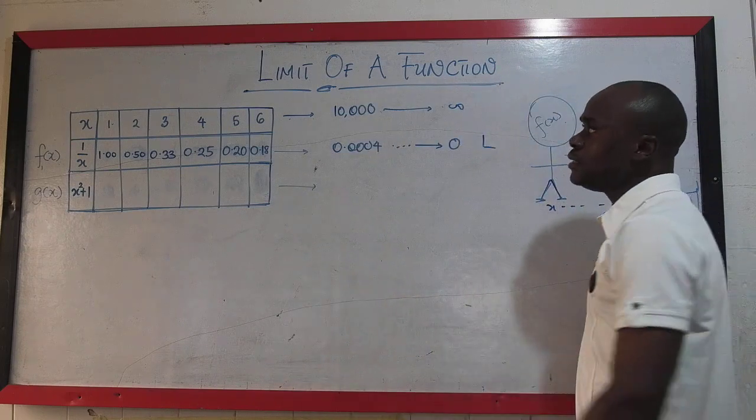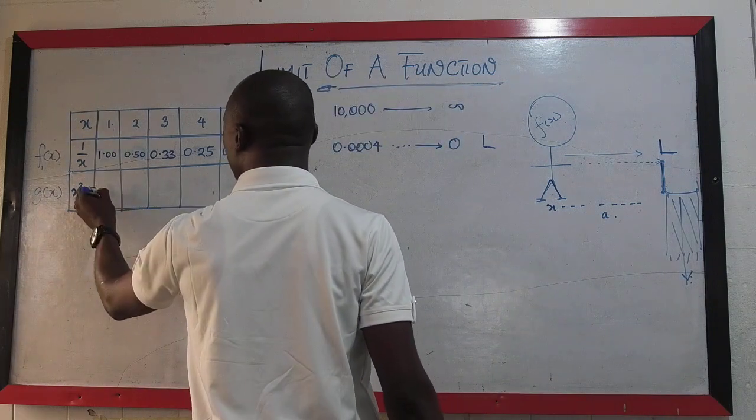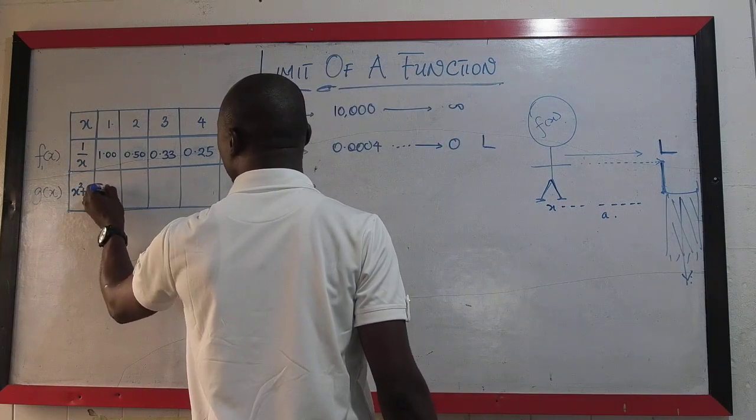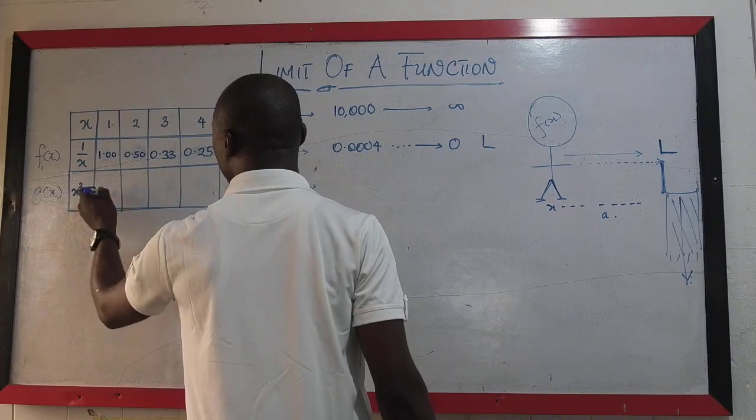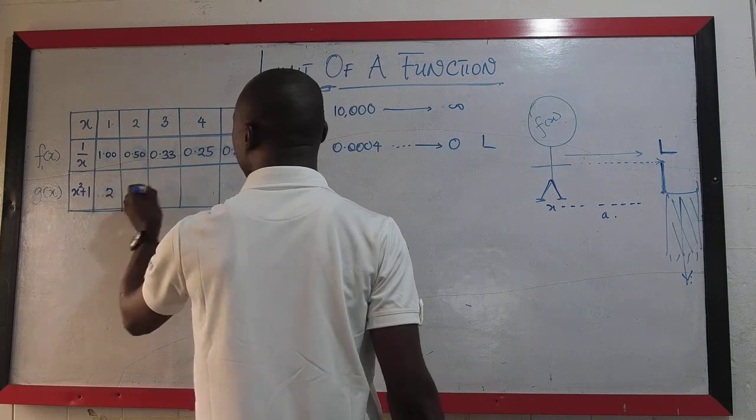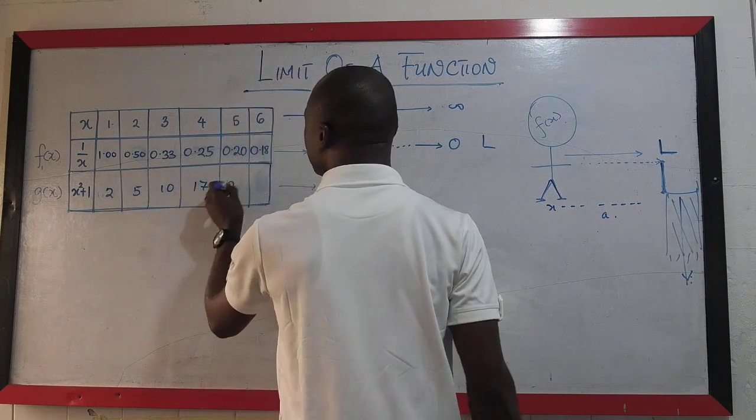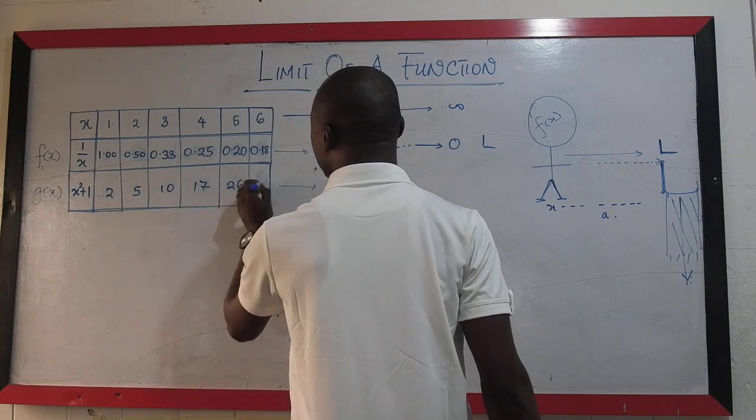On the other hand, we see that if we substitute this value here, we are going to have 2.0. Sorry, I can use this polynomial, so I have 2 here. Here I have 5. Here I have 10. Here I have 17. Here I have 26. And here I have 37.